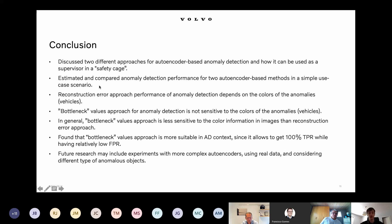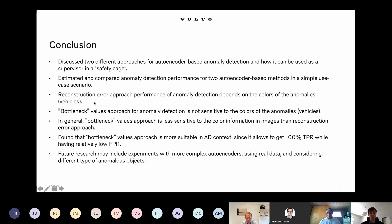We also estimated and compared the performance of two autoencoder-based methods using a simple use case on generated data. We showed that the reconstruction error approach performance can be affected a lot by color manipulation on images, while the bottleneck approach was not affected so much — at least when we changed yellow cars to gray.